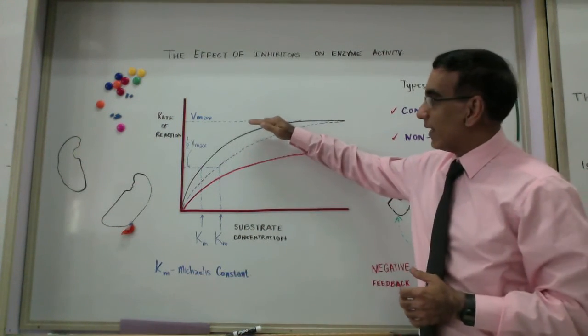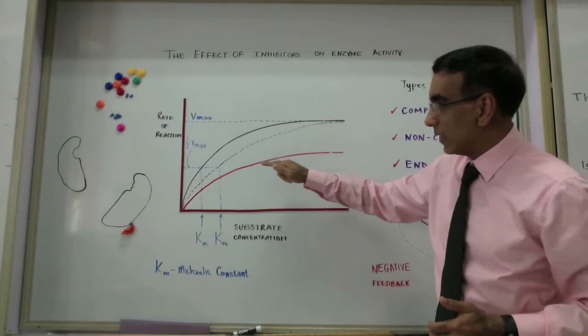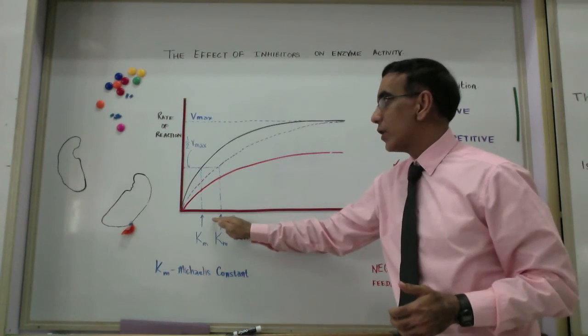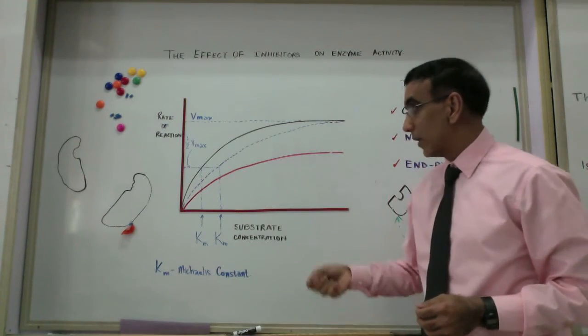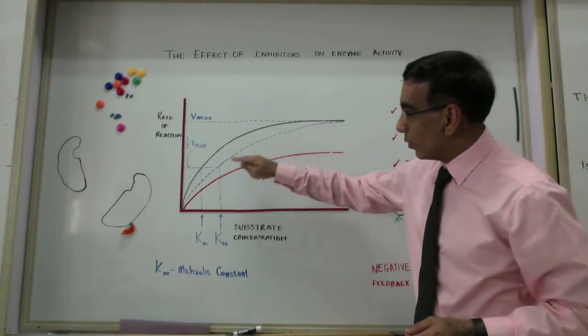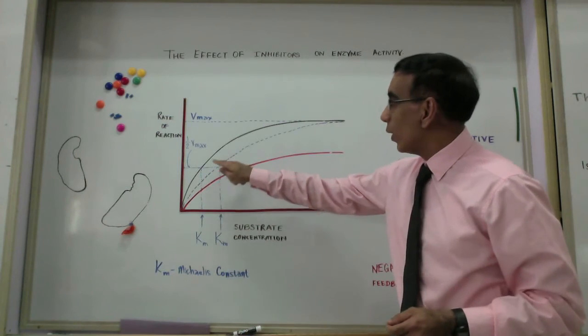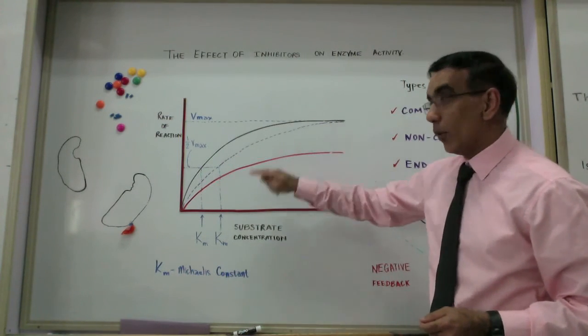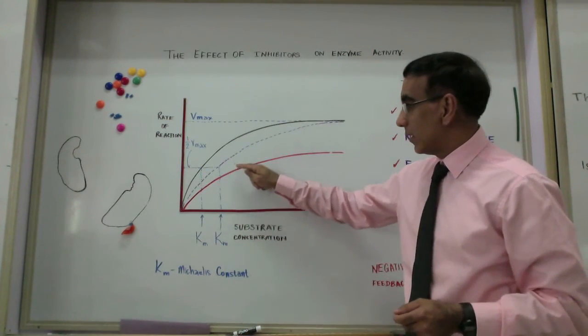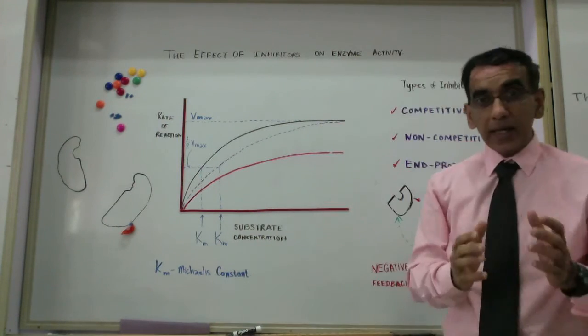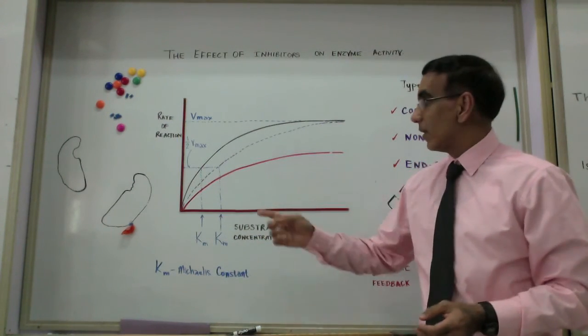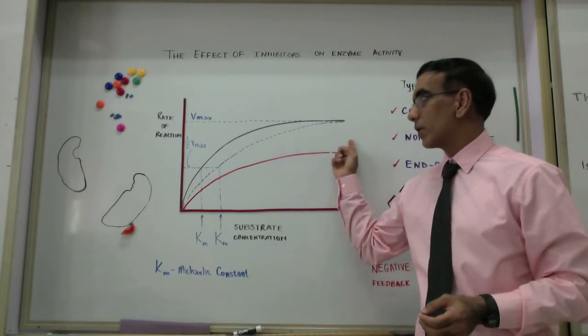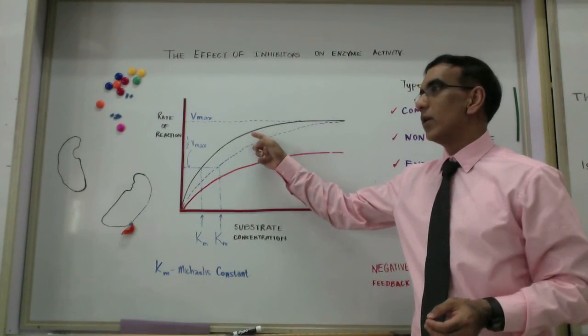One way is to find half of the maximum velocity. And you look at the substrate concentration that gives half of Vmax, that gives you KM, the Michaelis constant. And you can see here that you would have a fairly low KM without an inhibitor. And with the competitive inhibitor present, KM is much higher. KM is a measure, or it's a way of quantifying the effect of the competitive inhibitor versus the effect of no inhibitor.